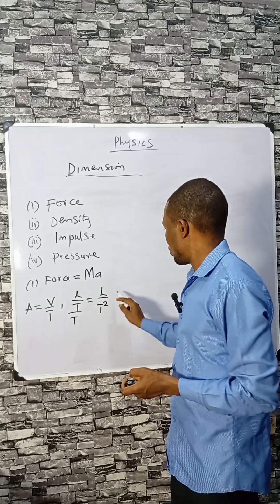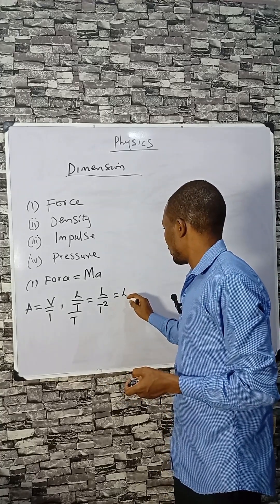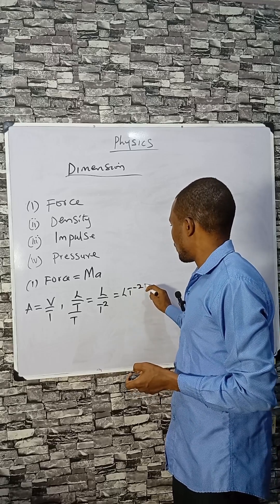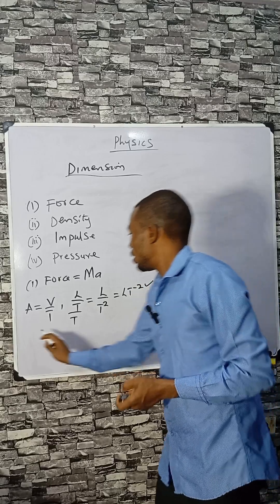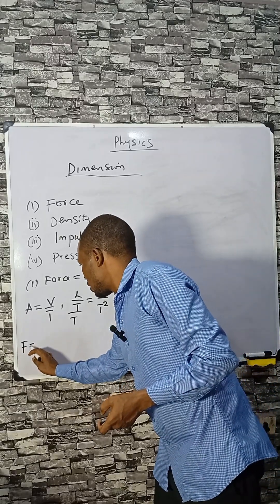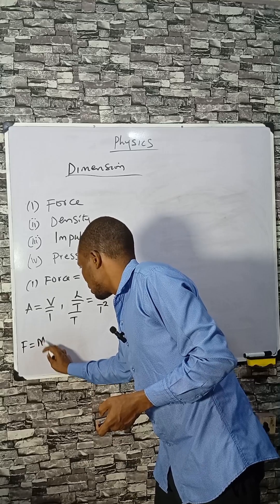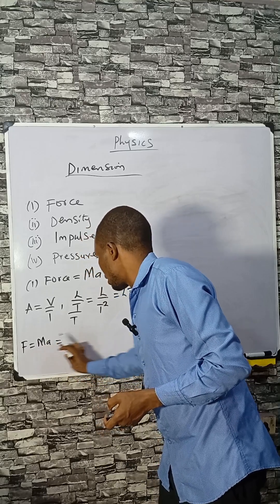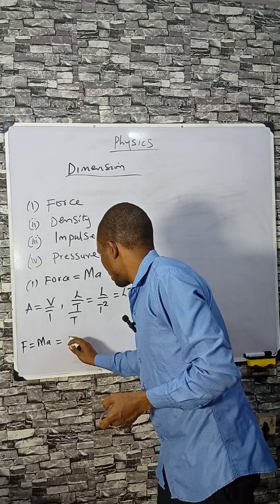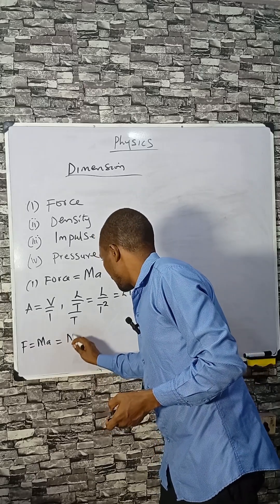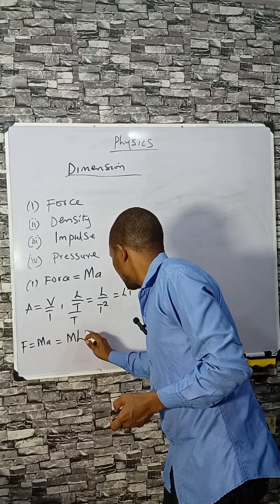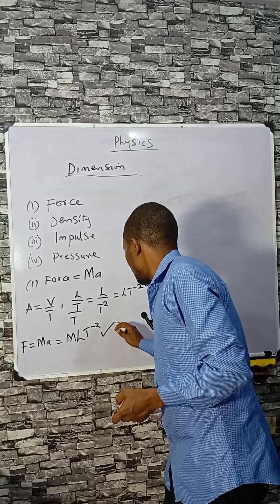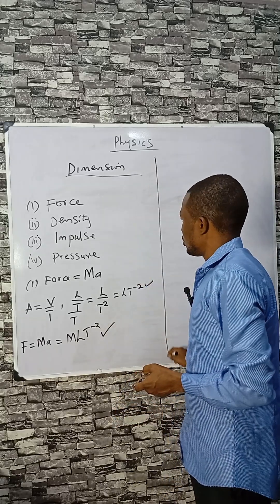Acceleration can be written as LT⁻². Then force is a product of mass times acceleration, so multiplying by M gives MLT⁻². This is the dimension of force.